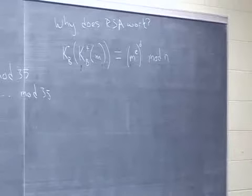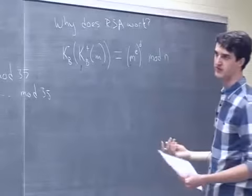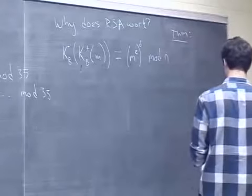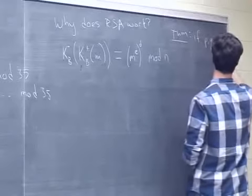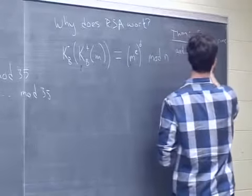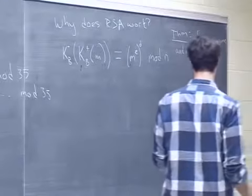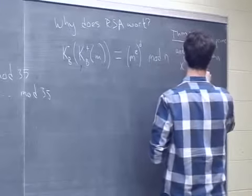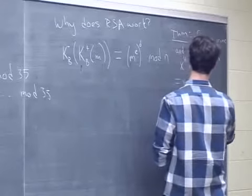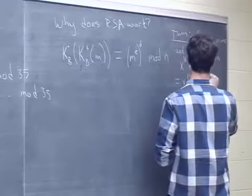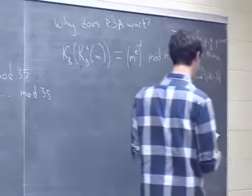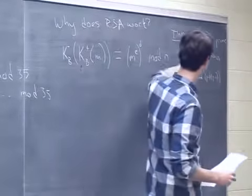The theorem — which I won't prove but you can look up — states: if p and q are prime and n = p × q, then x^y mod n = x^(y mod (p−1)(q−1)). Now that we have this theorem, we can apply it to our expression.